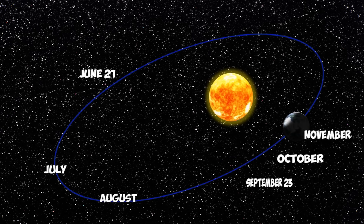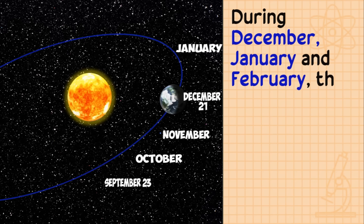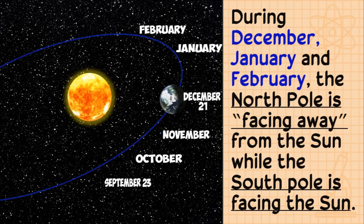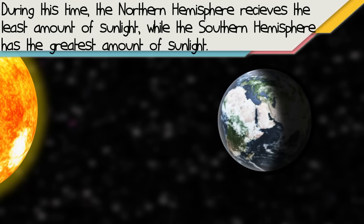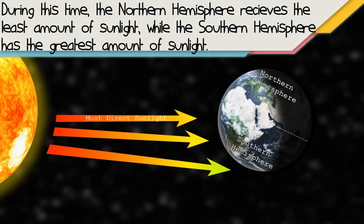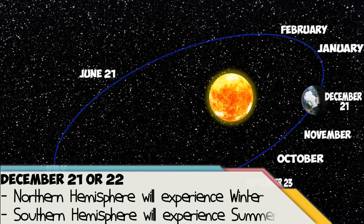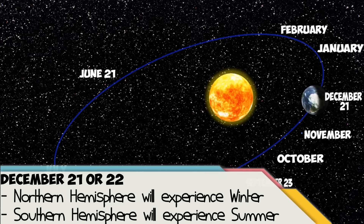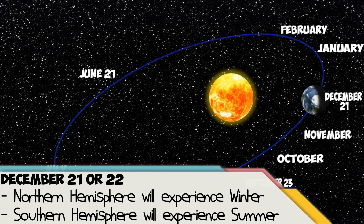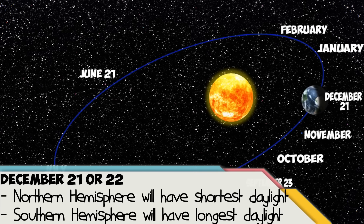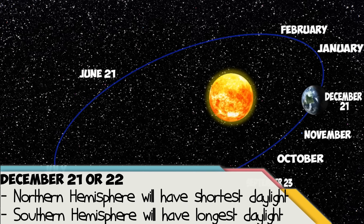The Earth continuously revolves. During December, January, and February, the North Pole is facing away from the Sun. Therefore, the northern hemisphere receives the least amount of sunlight while the southern hemisphere receives the greatest amount. Starting on December 21 or 22, the North Pole will experience winter, while places in the south will experience summer. The shortest daylight period occurs in the northern hemisphere, while the longest daylight period occurs in the southern hemisphere.